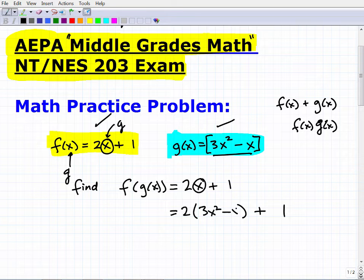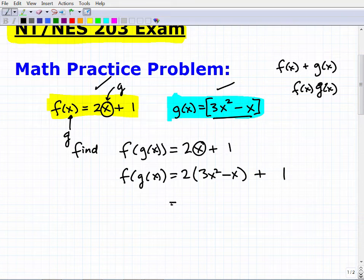Once we have this set up—you're saying okay, I plugged the g(x) function into the f function, this is a composite function—then you want to go ahead and simplify. Here I'll use the distributive property. This is going to be 6x² - 2x + 1. That's it. So f(g(x)) would be equal to this.